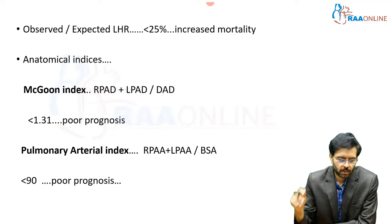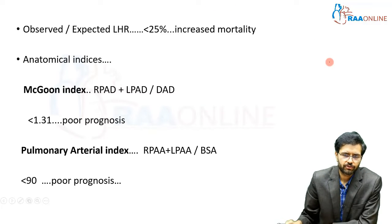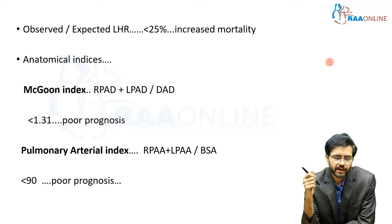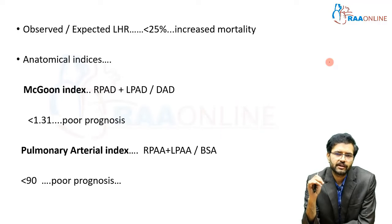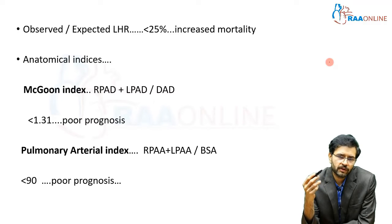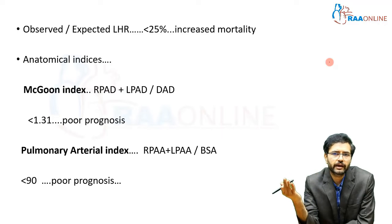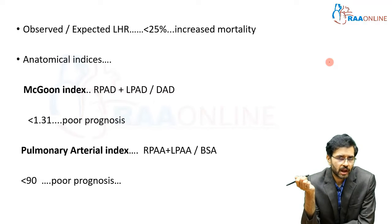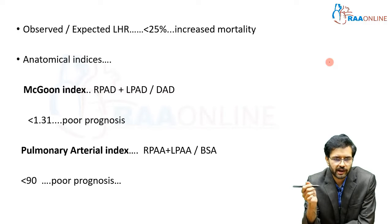A major problem with lung head ratio is that it varies with gestational age. To address this fallacy, we compare the observed lung head ratio with the expected lung head ratio for that particular gestational age. If the observed-to-expected value is less than 25%, there is an increased mortality.